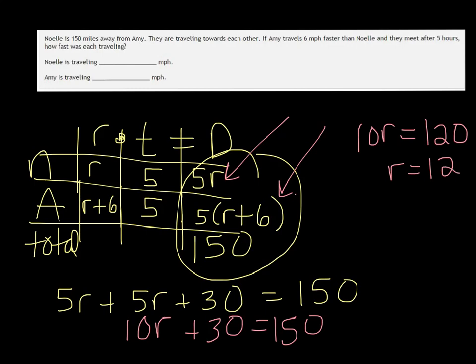So R is the rate that Noelle is going, so we're going to put 12 for hers. And if we add 6 to that, we would get 18 for Amy.